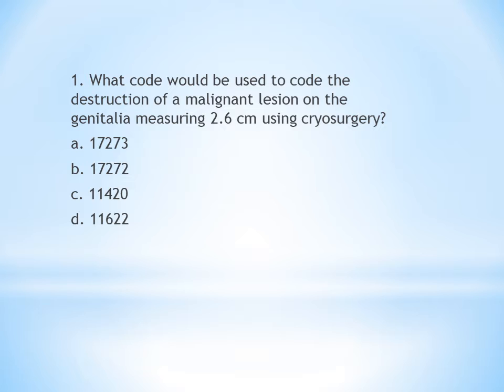Under destruction of malignant lesion you have different body groups: 17260 covers trunk, arms, or legs; 17270 covers scalp, neck, hand, feet, and genitalia; 17280 covers face, ears, eyelids, nose, lips, and mucous membrane. So genitalia comes under the body group 17270. In that group, search for diameter 2.6 cm — it falls under lesion diameter 2.1–3.0 cm, giving code 17273. The answer is A.